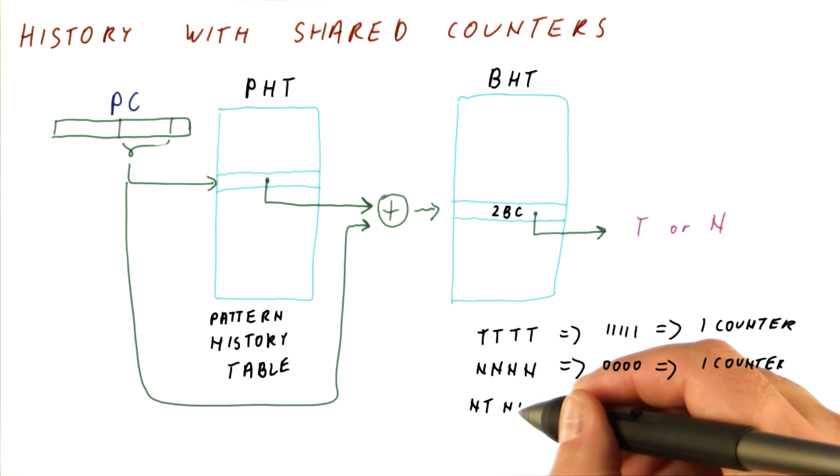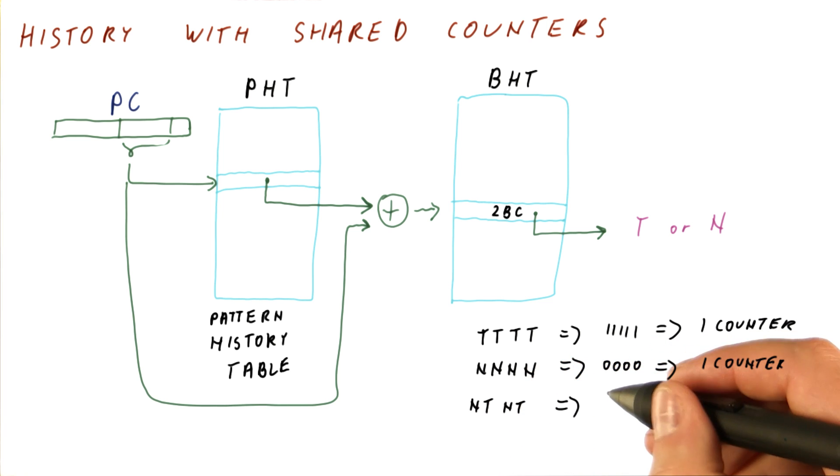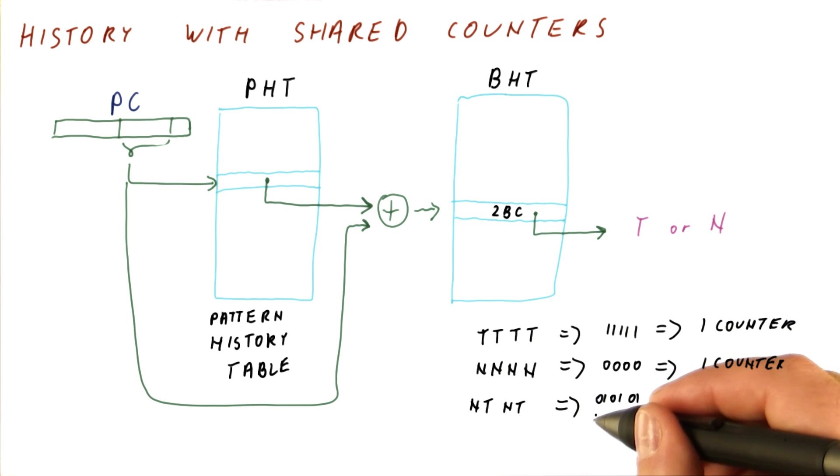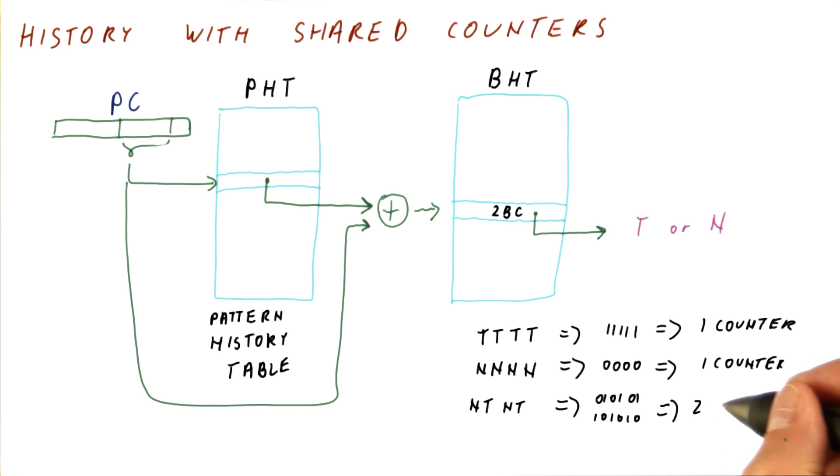If we have a branch that has something like not-taken, not-taken, it really has only two possible histories: 0,1,0,1,0,1 et cetera, or 1,0,1,0,1,0 et cetera. So it ends up using two counters.